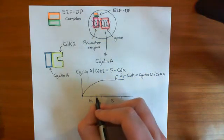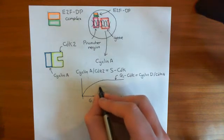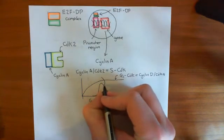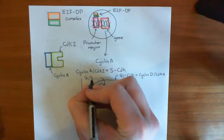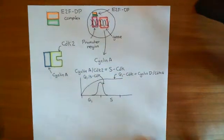Now, we'll add on our G1 SCDK, which was this cyclin-E CDK2 complex, which just spiked at the G1 S transitions. This was our G1 SCDK, or our cyclin-E CDK2 complex.